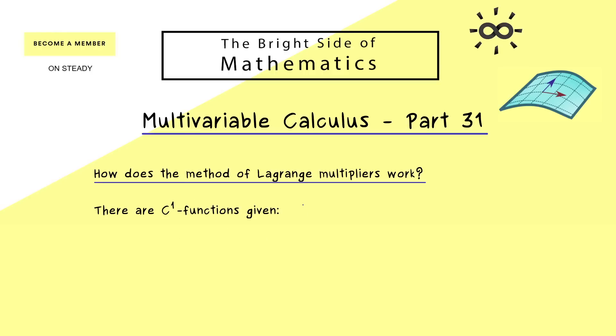First of all, there are C1 functions given. And the one we want to consider for extrema is called f. And the other ones are used to describe the constraints, and we call them gj. And we say that we have m of them, where m is usually less or equal than n. So equivalently, one can also put all these functions into a vector-valued function g.